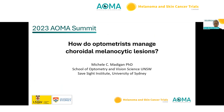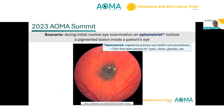Thanks for the invitation. I'd like to imagine a scenario where during an initial eye examination, an optometrist — who in Australia is a registered primary eye care health practitioner seeing around 70% of patients for the first time with eye problems — sees a pigmented lesion inside a person's eye.